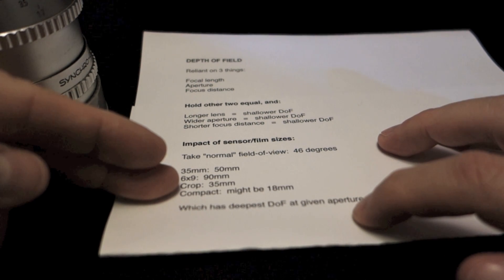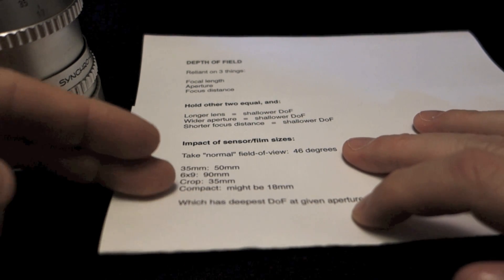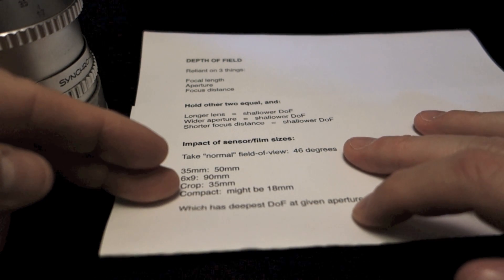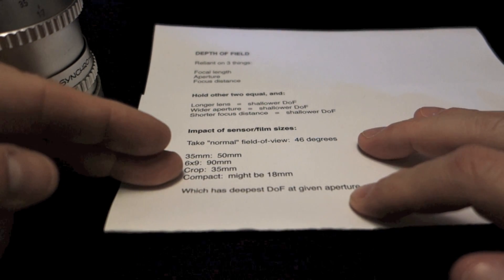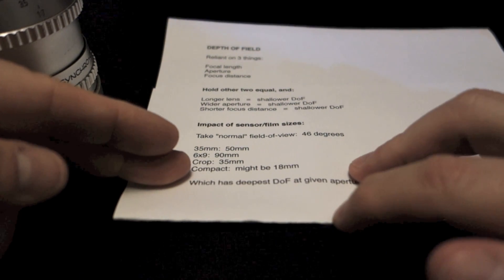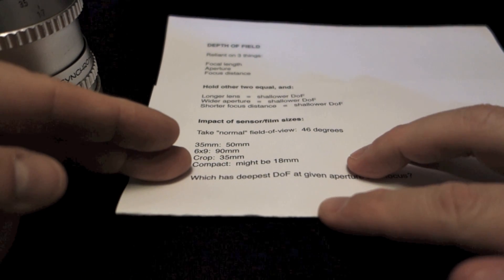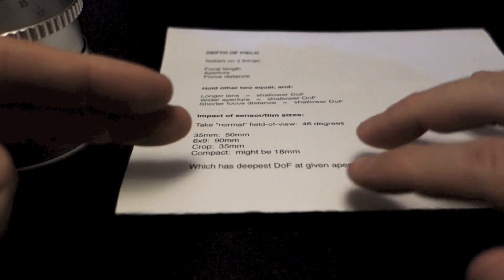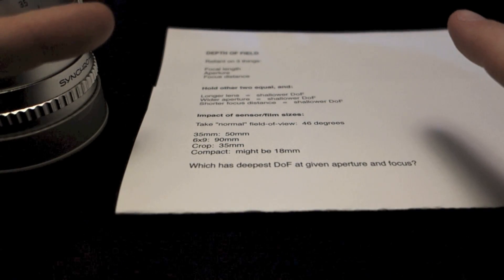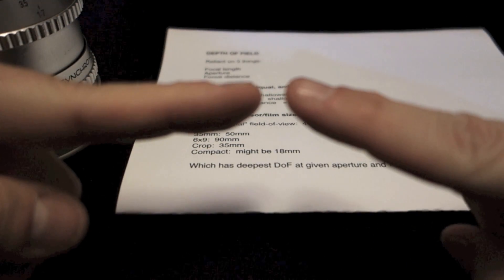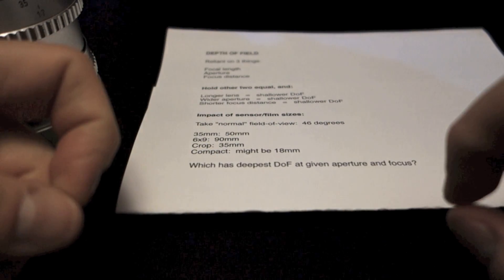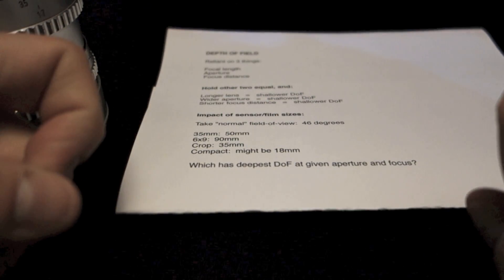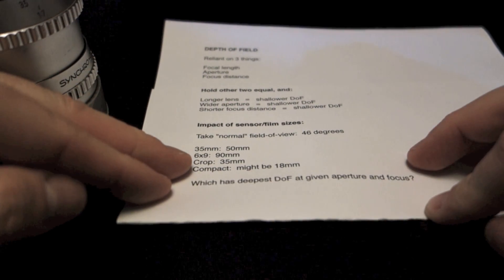On a crop digital camera, to get this field of view, you're going to mount something like a 35mm lens. Compacts vary a lot because the sensor sizes vary a lot, but let's just say it might be only 18mm. It's because you've got a really wide-angle lens, but there's only a little bit of its field of view being captured.